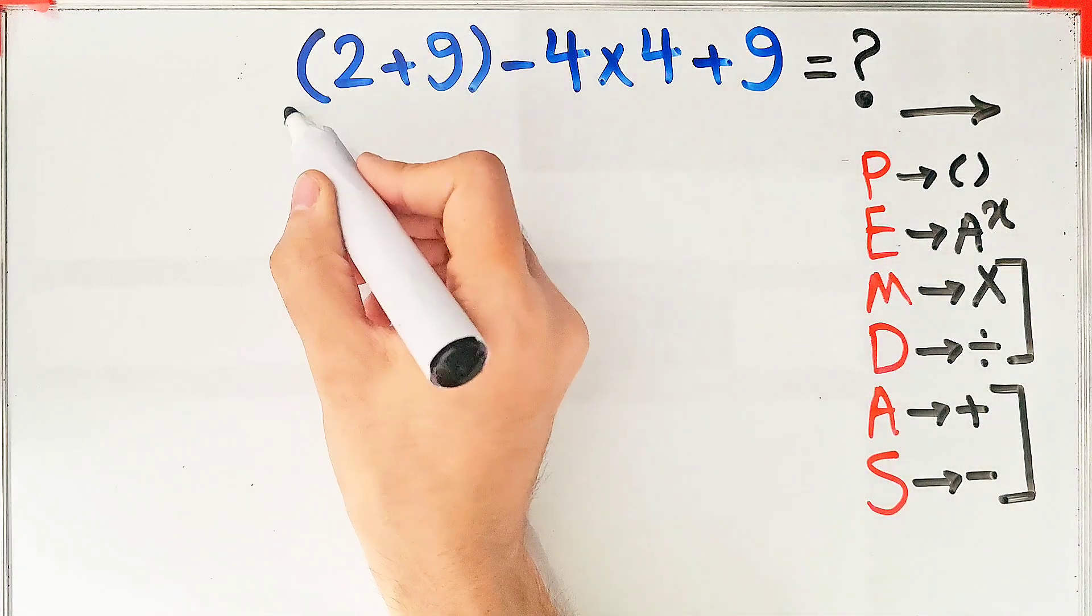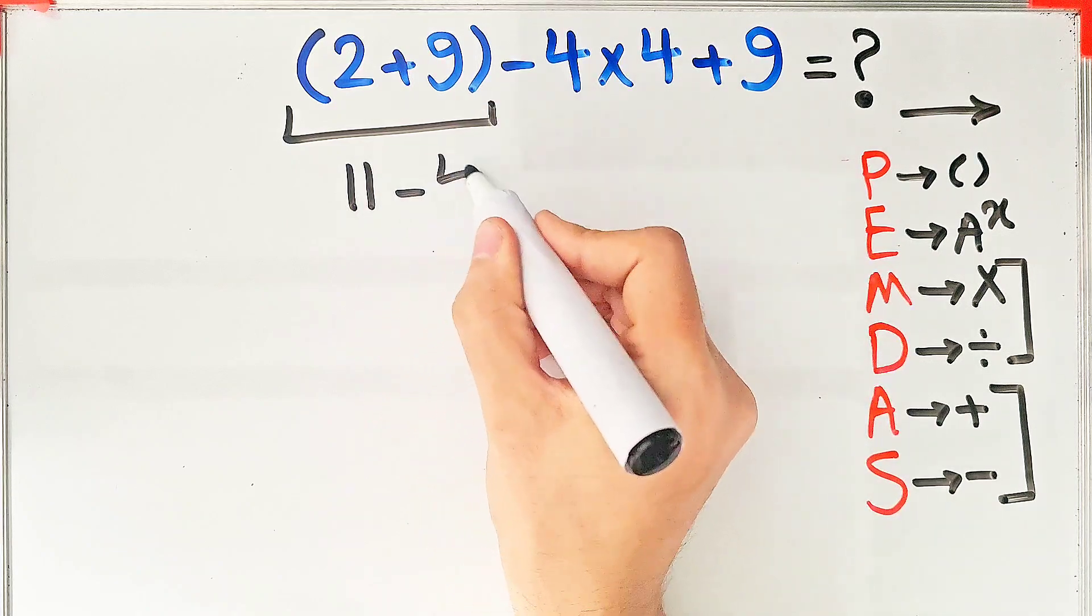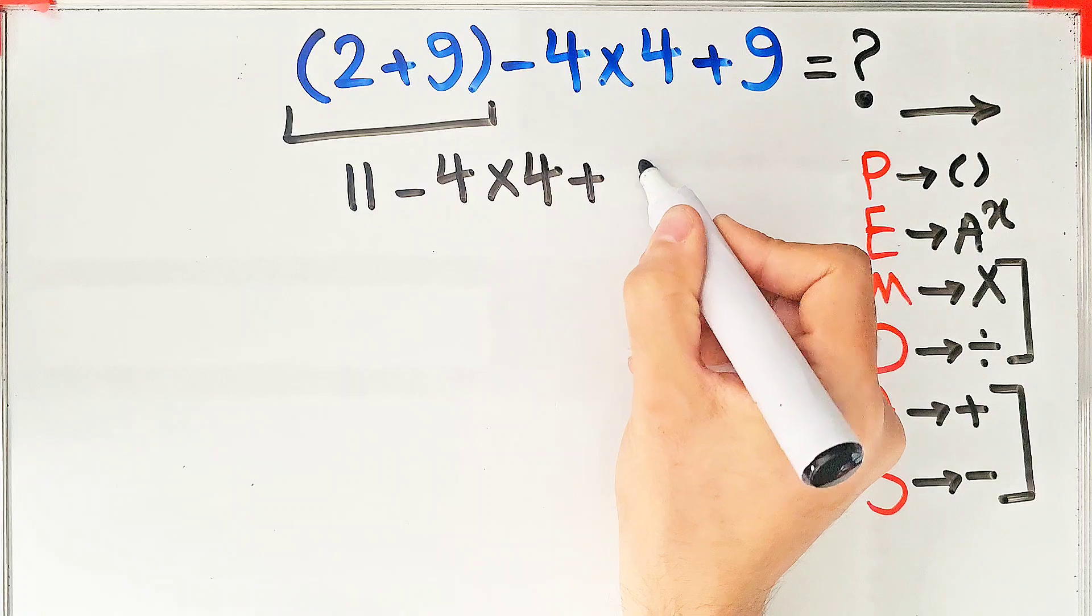Inside the parentheses we have 2 plus 9, which equals 11. Now we have 11 minus 4 times 4, then plus 9.